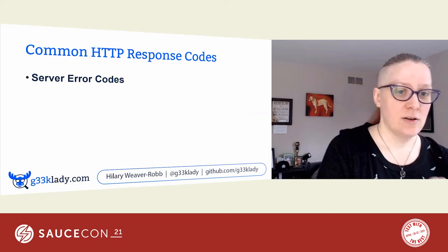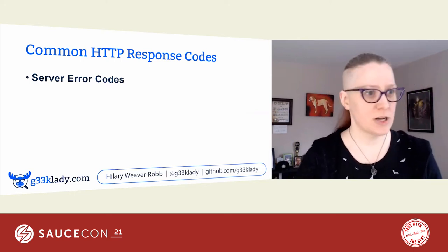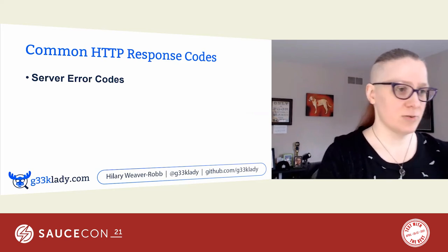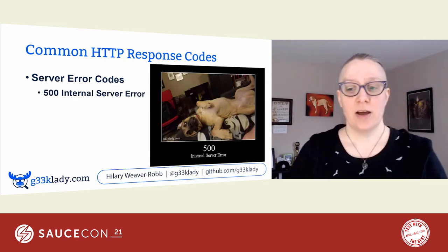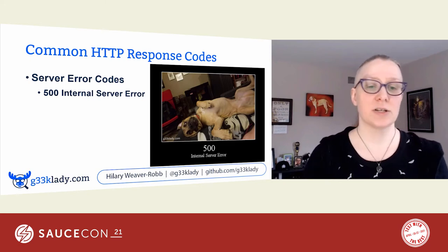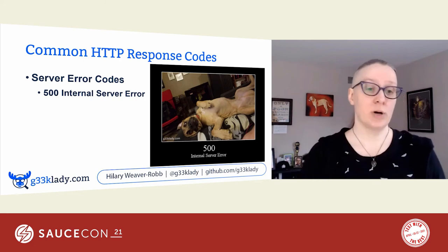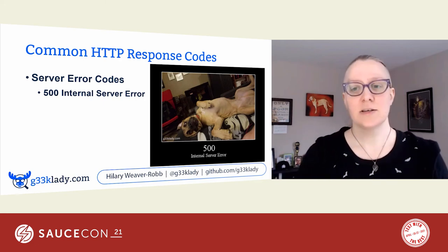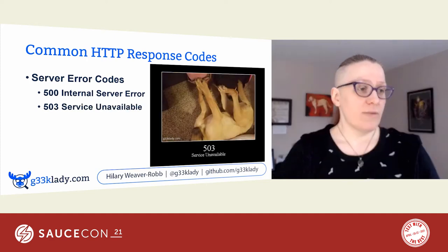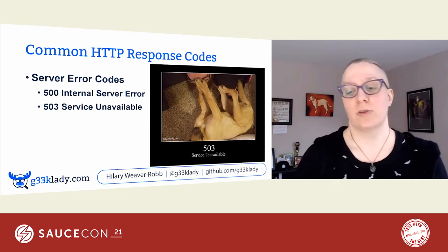And then the dreaded 500s — the server error codes. These are the ones where either it was a totally unforeseen circumstance or the application is just not coded to handle these scenarios. We have the 500 Internal Server Error: it's a generic catch-all error when the server throws an exception. If I see these when I'm expecting like a 404, I'm putting a bug in right away because this should be handled properly. And 503 Service Unavailable: the server is temporarily unavailable either due to maintenance or being overloaded.